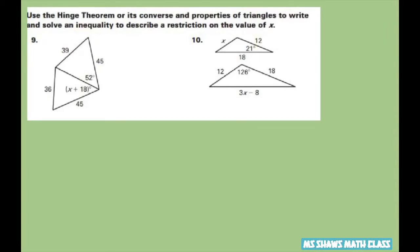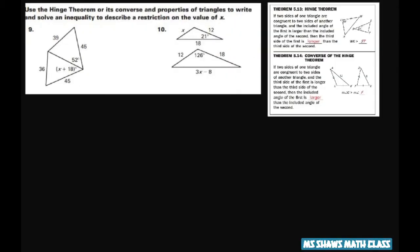So if we get started here, we're going to use for the first one the converse of the Hinge Theorem. And basically we have two sides are congruent, and this, due to the reflexive property, this side is congruent to itself.